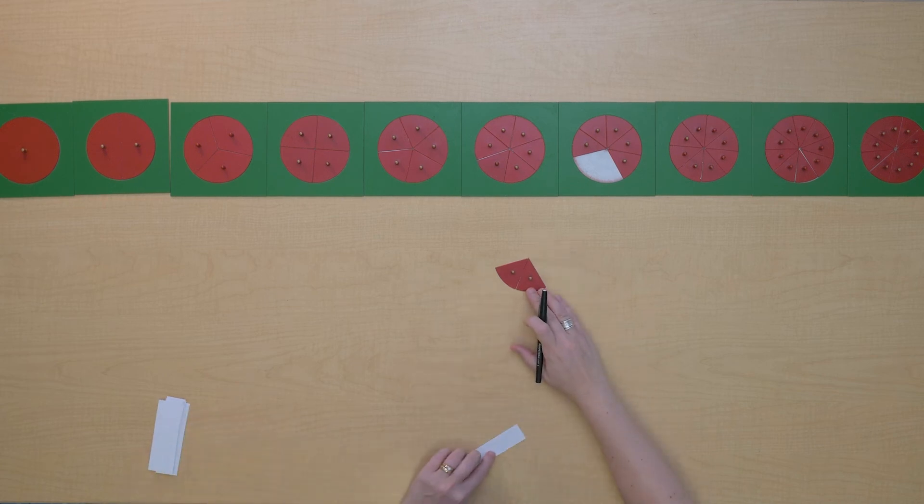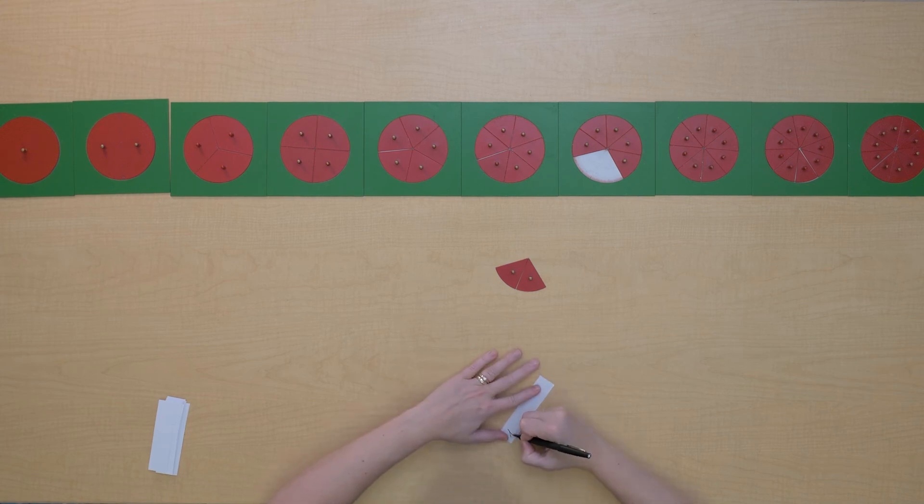When we have two, like this, from a family, we can call it two-sevenths.